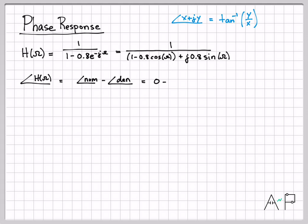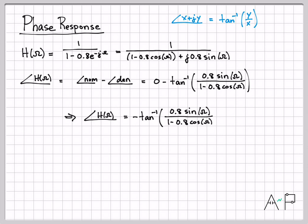So here, my imaginary part is 0.8 sine of omega. So that is going to go up as the y component. And then my real component x is 1 minus 0.8 cosine of omega. It is that. And then that really doesn't simplify a ton in this case. There's no nice trig or anything that simplifies. I can get rid of the 0 there. And that is the phase response expression.